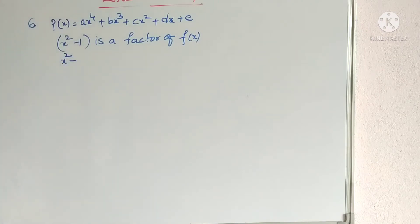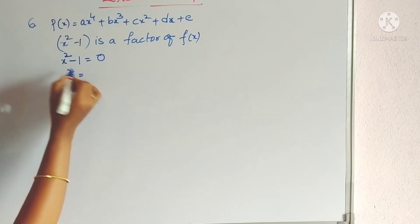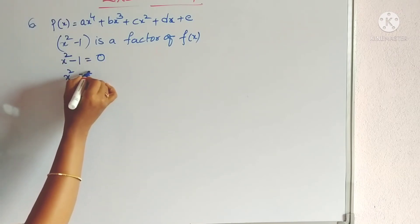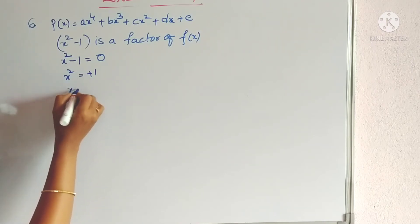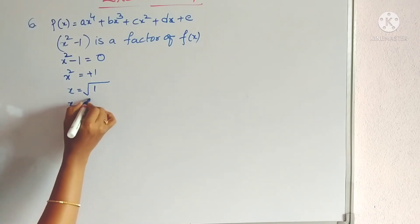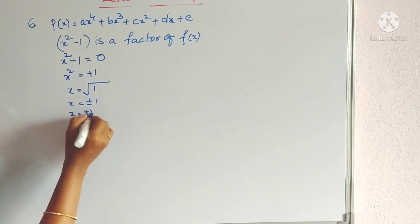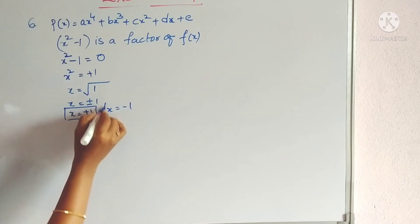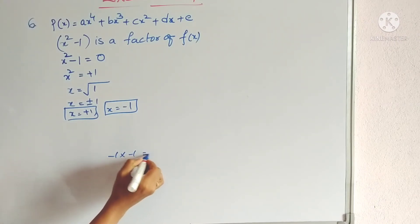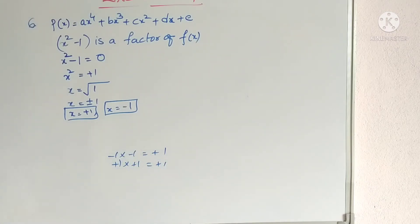First we find the zeros of x² − 1 = 0. Transposing: x² = 1, so x = ±1, because (−1)(−1) = 1 and (1)(1) = 1. Therefore x may be +1 or −1.